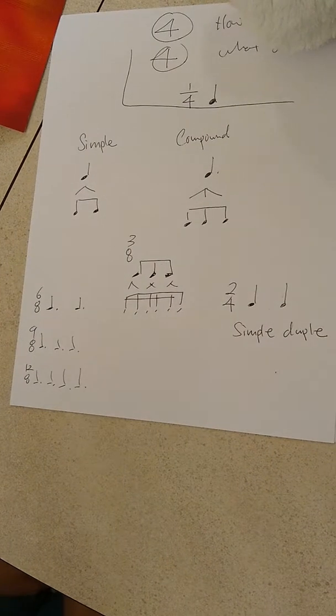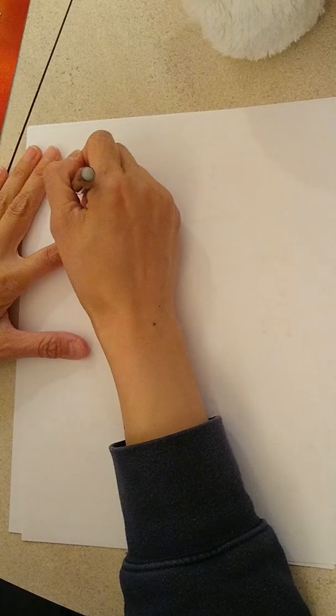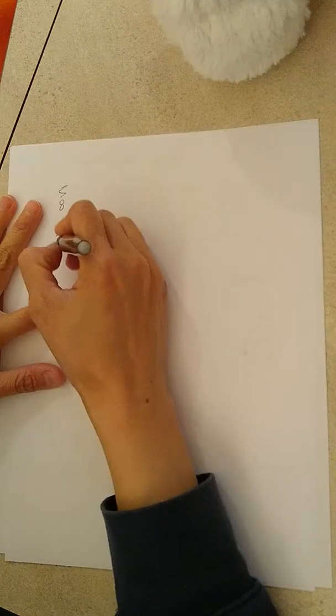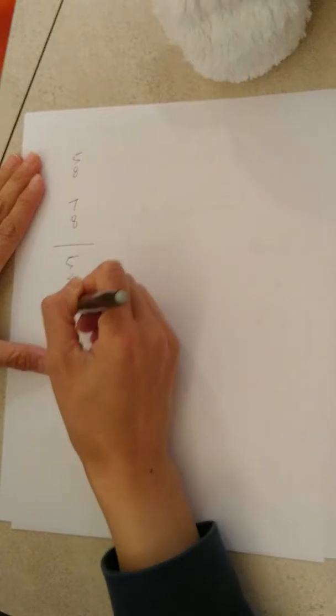But it doesn't stop there. There are irregular meters. Meters are just not regular. So irregular meters, usually you will see five eight, seven eight. Of course, you will see five four, seven four, stuff like that.